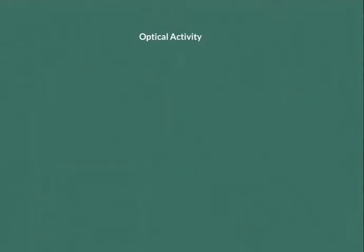Today we are going to discuss a topic called optical activity. Optical activity is different from normal polarization. Some crystals and some organic liquids possess this property, in which when linearly polarized light passes through those crystals or liquids along the optic axis, it rotates as the beam propagates and the plane of polarization rotates through a certain angle.